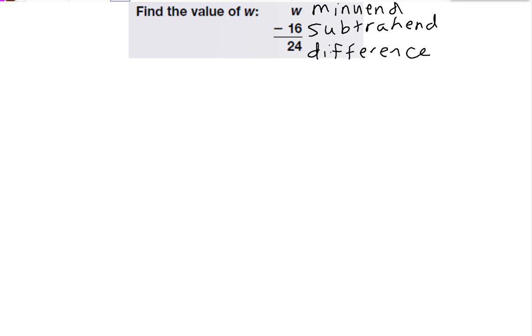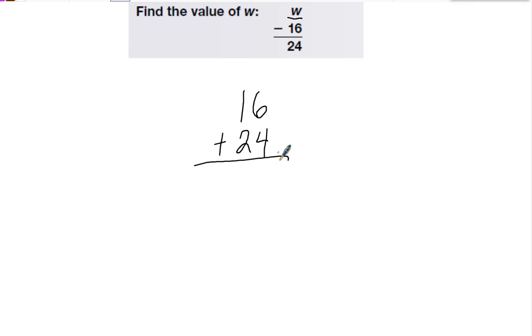So in this problem, the minuend is missing, the first number. When the first number is missing, I can find the answer by adding. So I'm going to do 16 plus 24. So when the first number, the minuend, is missing, we add to find it.